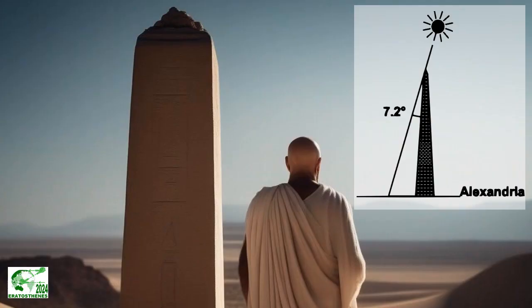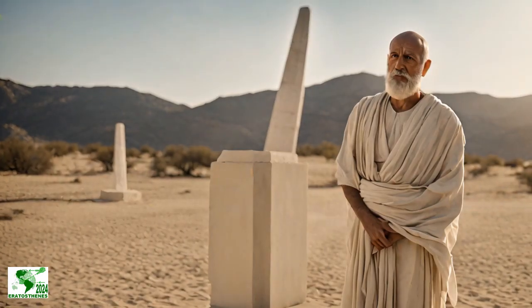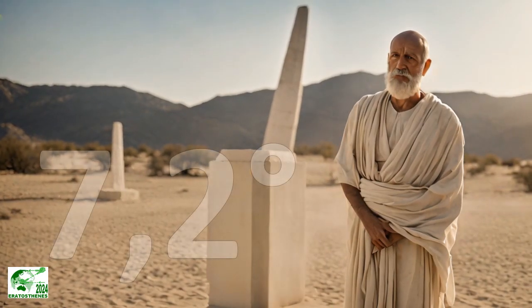Eratosthenes set about measuring the shadow of an obelisk whose height he knew, and used this information to deduce the angle of the sun's rays from the vertical. He found 7.2 degrees.